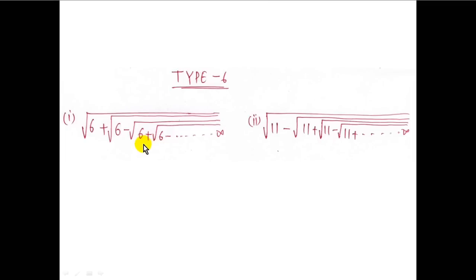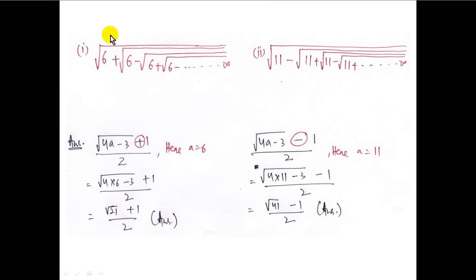If the question has both positive and negative symbols alternating, we use the formula root over of (4a minus 3), plus 1 upon 2, when the first symbol is positive. For example, root over of 6 plus root over of 6 minus plus minus up to infinity — here a equals 6, so the answer is root over of (4 into 6 minus 3) plus 1 upon 2, giving root over 21 plus 1 upon 2.